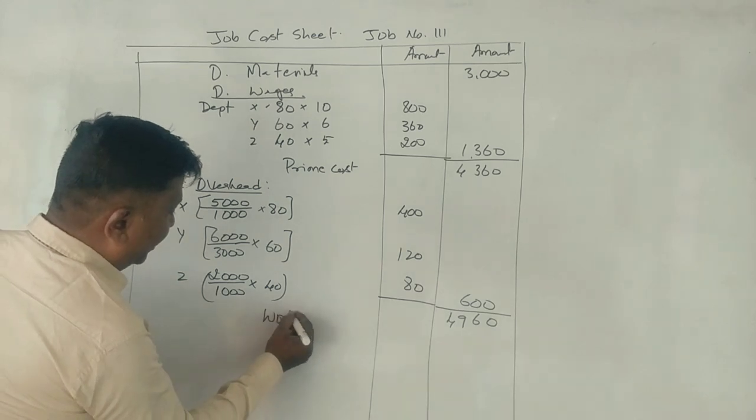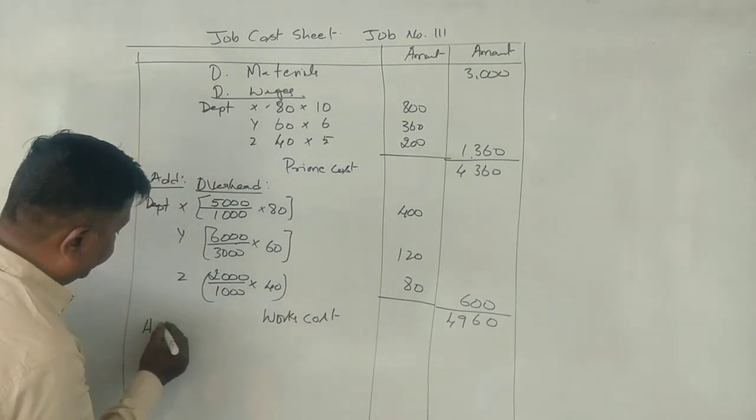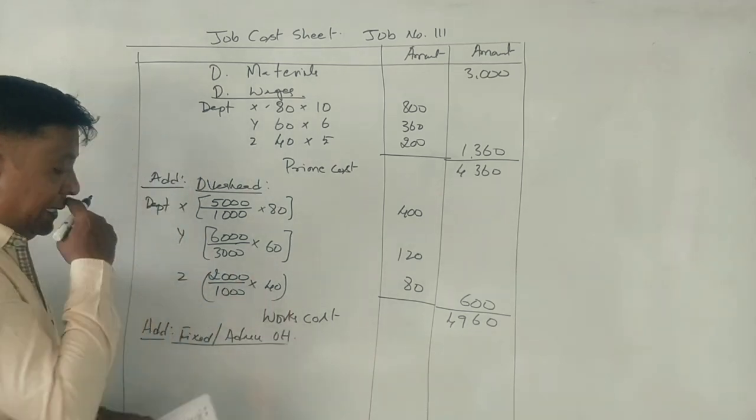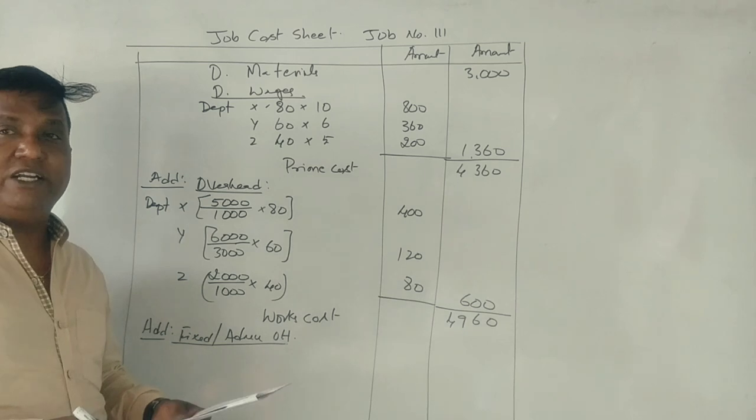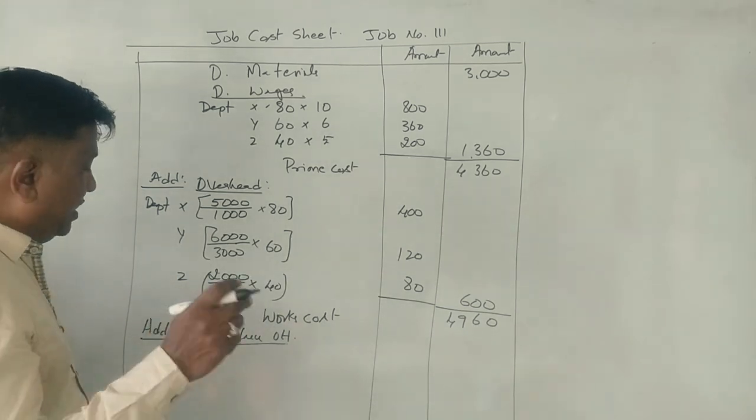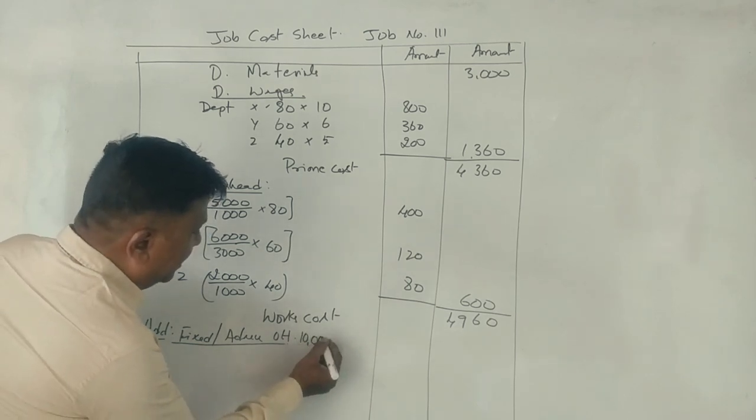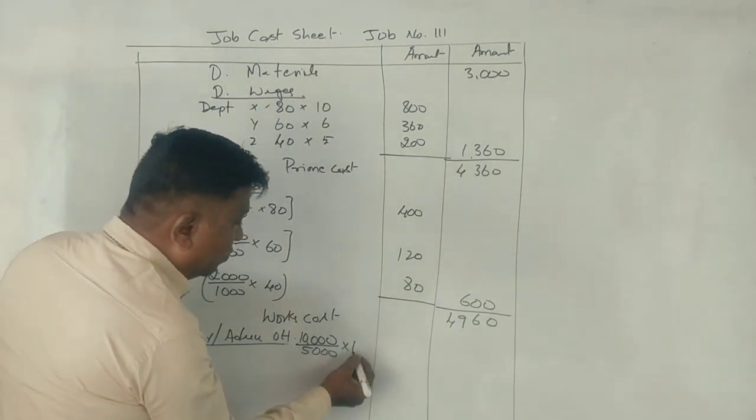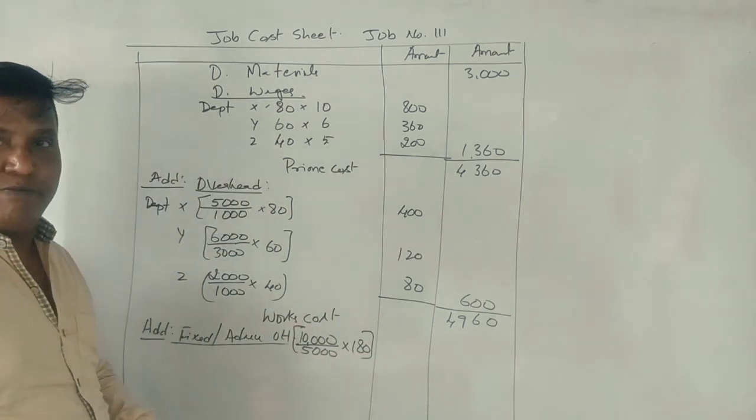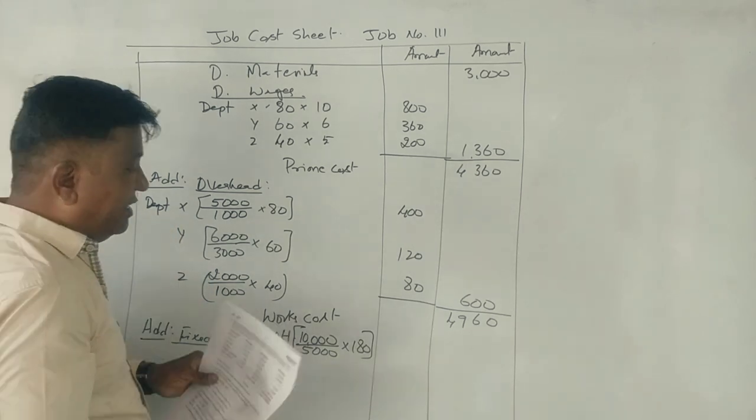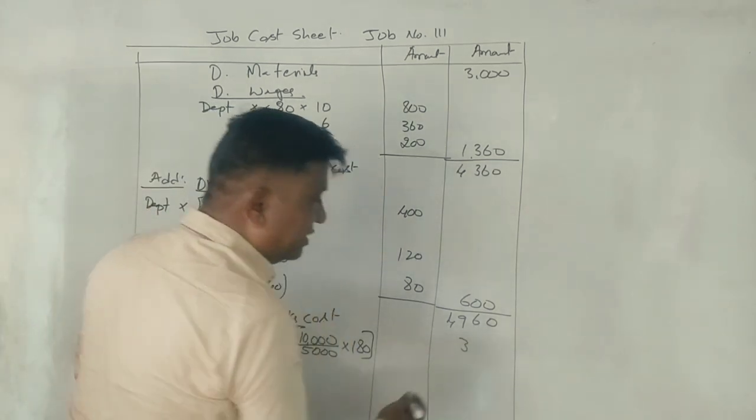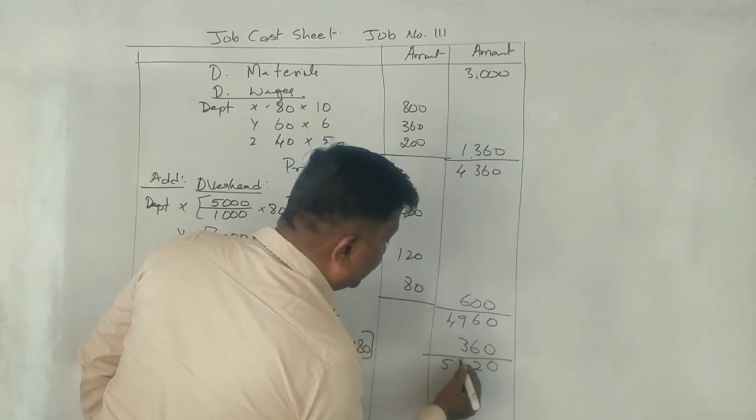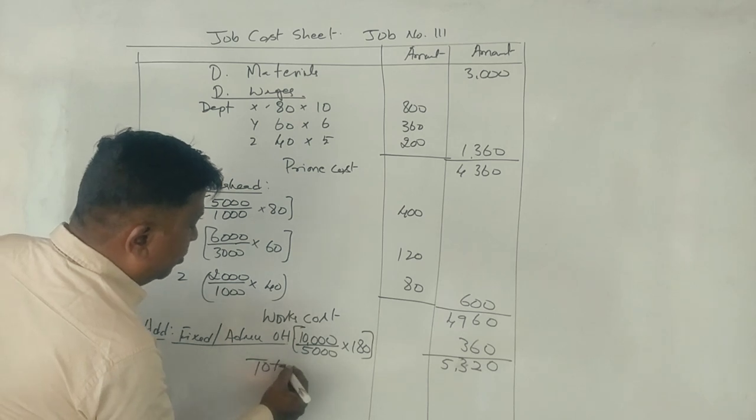Total 5,000. Works on cost, works cost and fixed under administration overhead. 5,000 normal working hours, 10,000 rupees. Department X, Y, Z, 180 hours. 320 rupees, that is the cost.